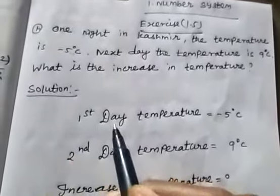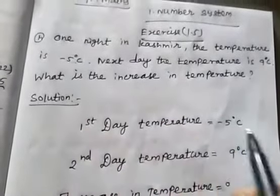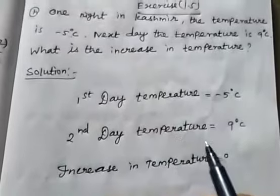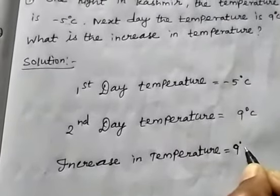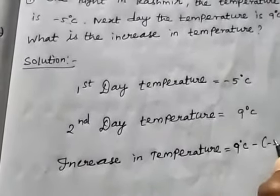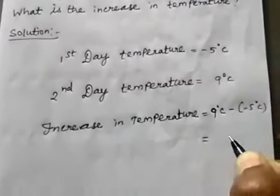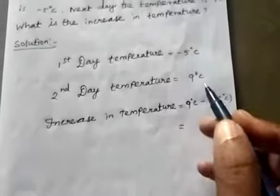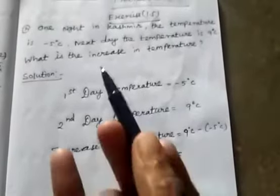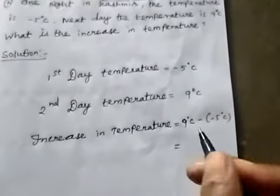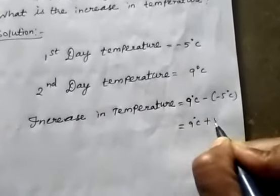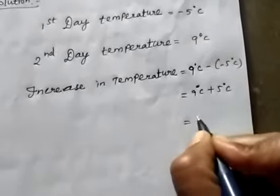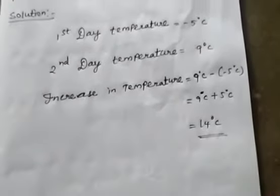Solution: First day temperature is minus 5 degrees Celsius. Second day temperature is 9 degrees Celsius. Increase in temperature equals 9 minus (minus 5) degrees Celsius, which gives 9 plus 5 equals 14 degrees Celsius. So the increase in temperature is 14 degrees Celsius.